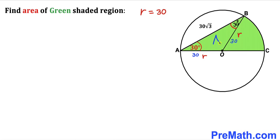Now let's focus on triangle AOB. We know angle OAB is 30 degrees and angle ABO is 30 degrees as well. Since the sum of angles in any triangle is 180 degrees, angle AOB must be 120 degrees.